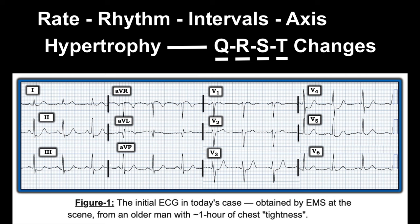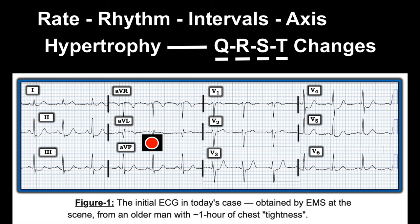The QTc does not appear significantly greater than half the R-to-R interval — probably fine. For axis: upright in lead I, more upright in AVF, so approximately plus 60 to plus 70 degrees — a normal axis. For chamber enlargement: the number 35 is the key criterion — deepest S in V1 or V2 plus tallest R in V5 or V6 — not more than 35, so no chamber enlargement.